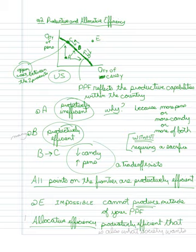So an allocatively efficient point is a productively efficient point that is also what society wants. So it basically takes into account our needs and preferences. What kind of combination of pens and candy do we really want? So there's going to be one and only one productively efficient point that is also allocatively efficient. So there's only one allocatively efficient point. There are many productively efficient points.